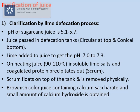After this, heating of the juice is done at around 90 to 110 degrees Celsius. In this step, insoluble lime salts and coagulated protein precipitate out. This whole material is known as scum. Scum floats on the top of the tank and can be removed physically. After removing the scum, a brownish color juice is obtained. This juice contains calcium saccharate and a small amount of calcium hydroxide.